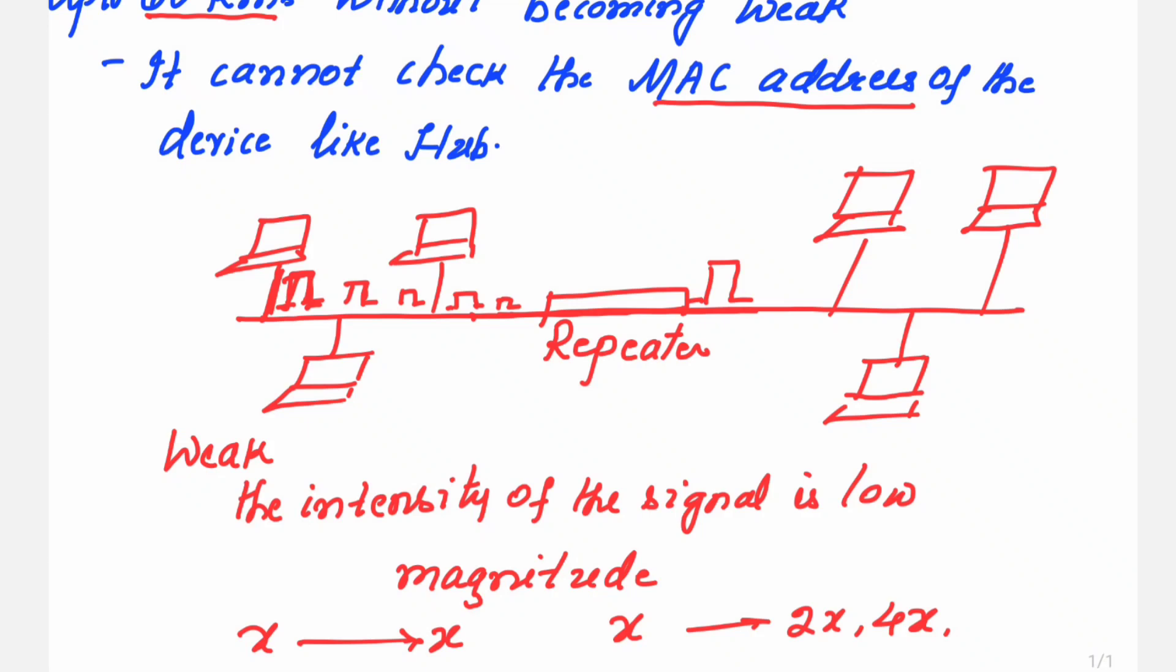Moreover, the repeaters cannot check the MAC address of the device like hub. Main function of the repeater is to increase the intensity of the signal. But what exactly is happening is repeater is also forwarding that signal to the other part of the network.